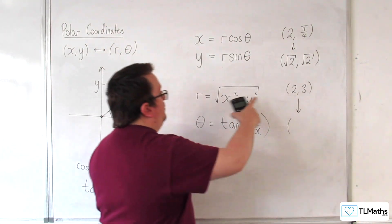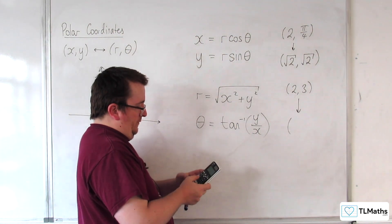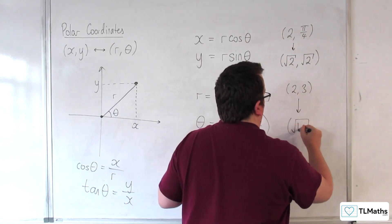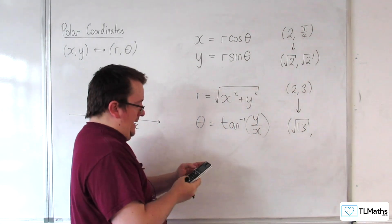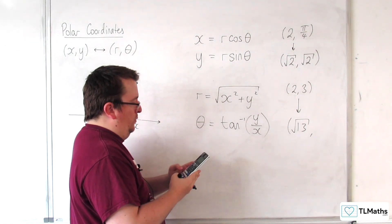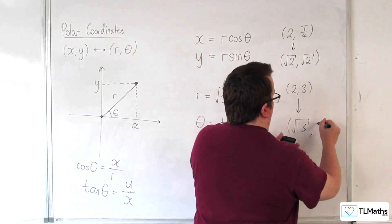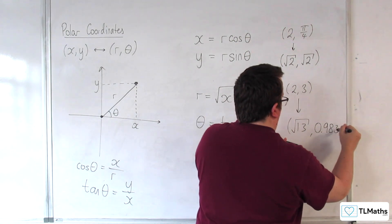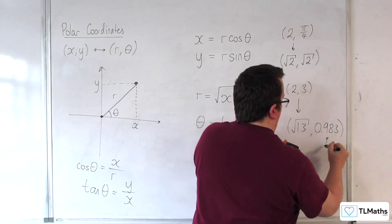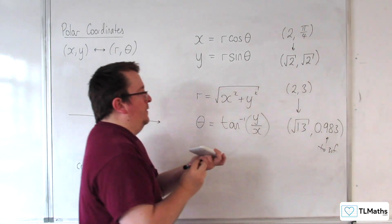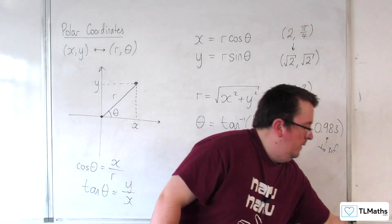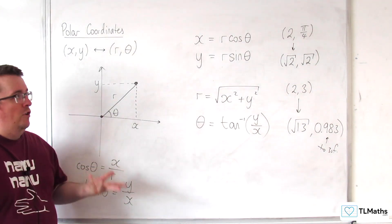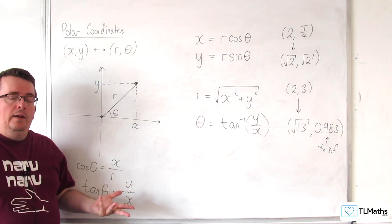Then I can substitute X is 2, Y is 3 into this. So square root of 2 squared plus 3 squared gets me root 13. And the inverse tan of 3 over 2 is, to 3 significant figures, 0.983. So this is how we can convert from Cartesian to polar and vice versa.